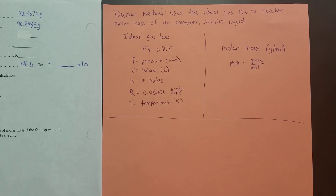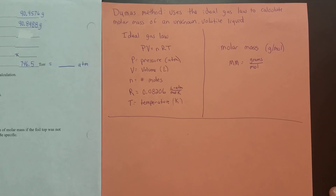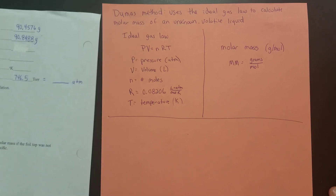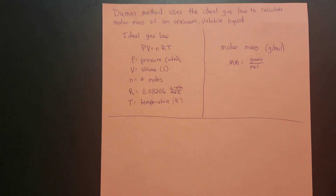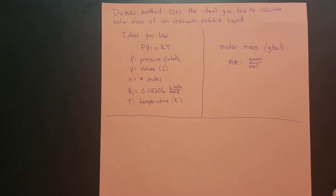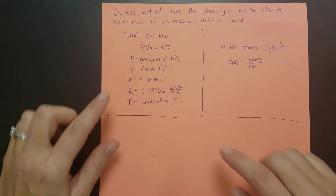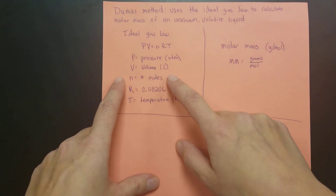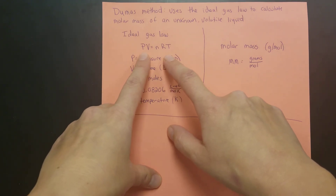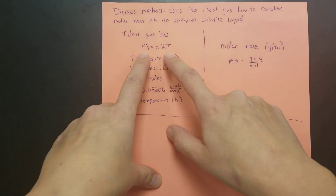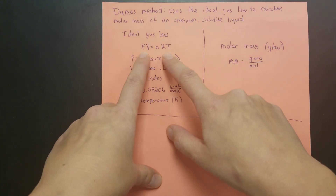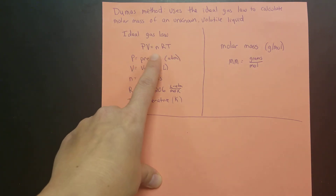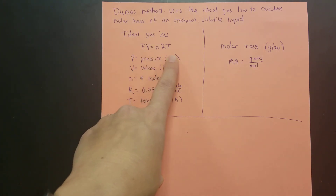Here's a refresher on the ideal gas law. There's an equation sheet in the folder for this lab that has all the equations you will need. One of those equations is the ideal gas law, and that is PV is equal to nRT.